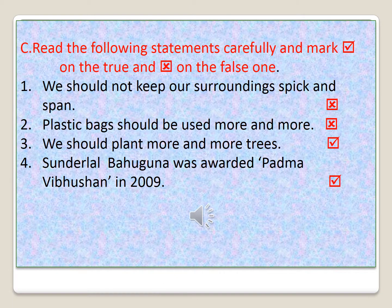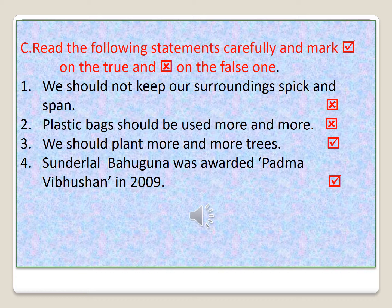Read the following statements carefully and mark tick on the true and cross on the false. The first one is: we should not keep our surroundings spick and span — this is false. Number two: plastic bags should be used more and more — this is also wrong. We should not use plastic bags; we should use cloth bags instead because plastic bags do not decompose for hundreds of years, and they increase the burden of garbage on our Mother Earth.